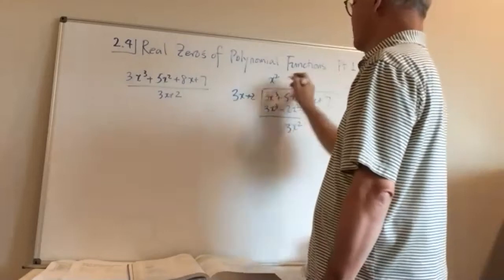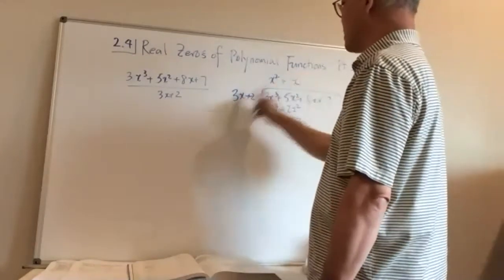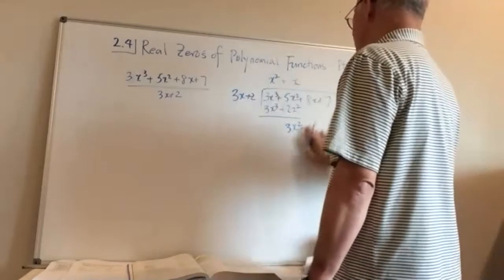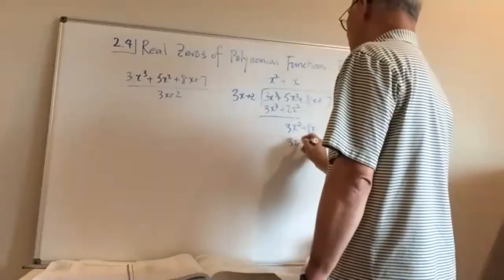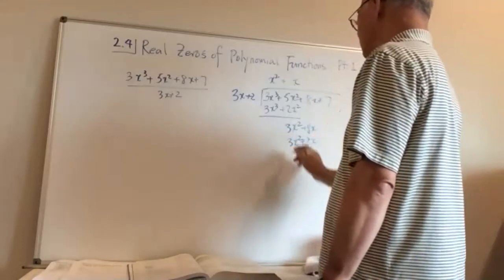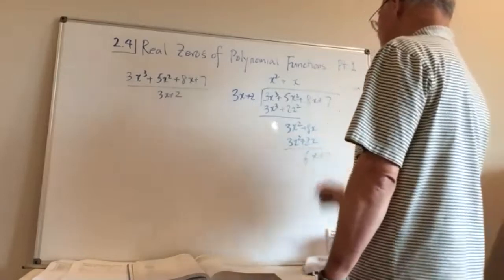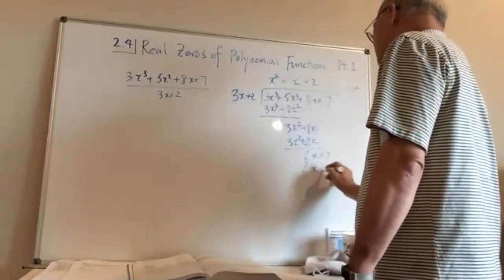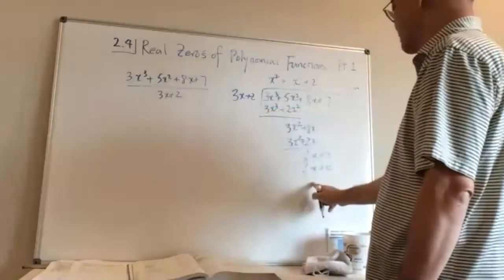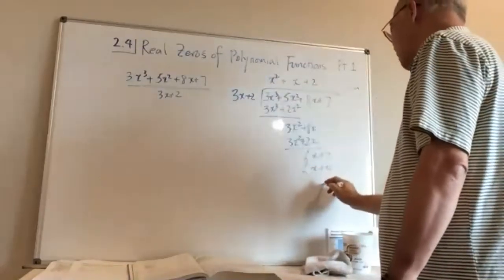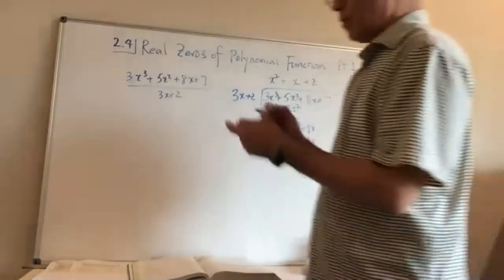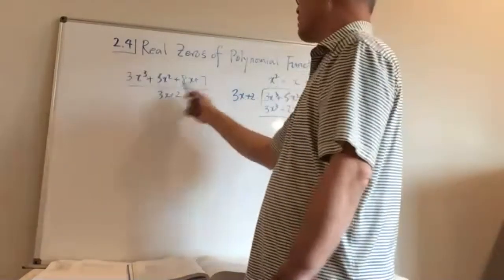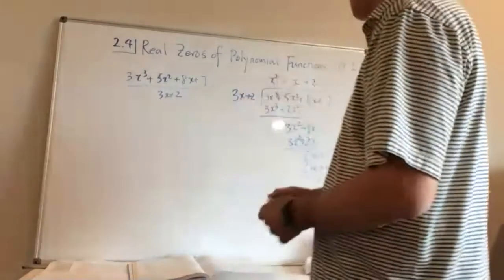To get 3x², I multiply by x — x times 3x is 3x², x times 2 is 2x. I bring the 8x down, do the multiplication, subtract, and get 6x + 7. To get 6x, I multiply by 2: 2 times 3x is 6x, 2 times 2 is 4. I subtract and get a remainder of 3, which means this polynomial is not entirely divisible.